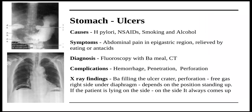Moving on to the stomach — stomach ulcers. The most common causes are H. pylori, NSAIDs like aspirin, smoking, and alcohol. Symptoms include abdominal pain in the epigastric region, which is usually relieved by eating or by taking antacids. The diagnosis is done by fluoroscopy with barium meal and a CT scan.